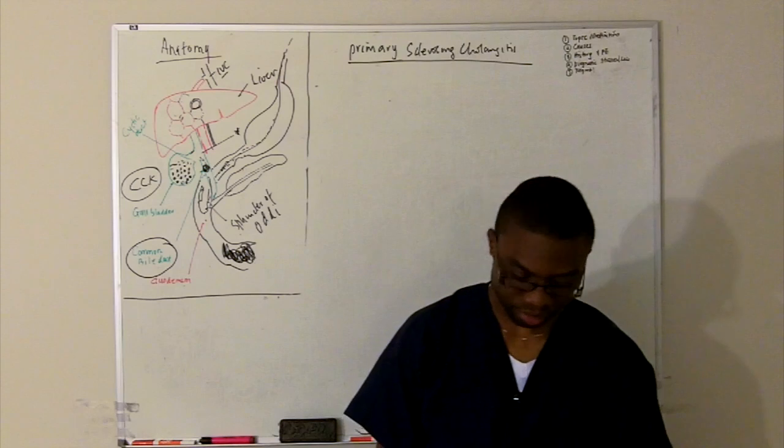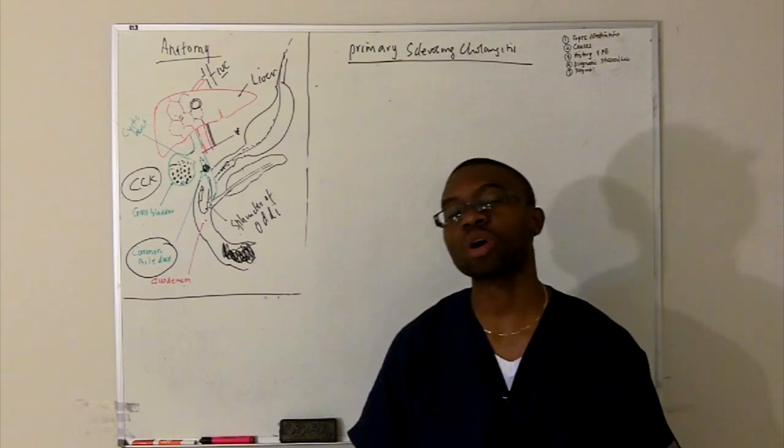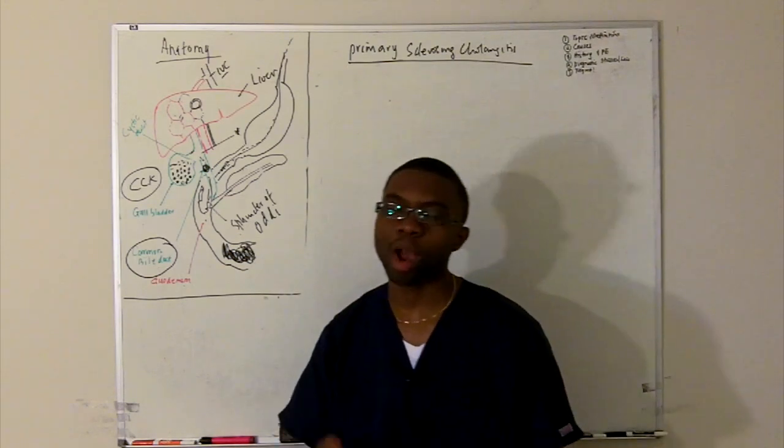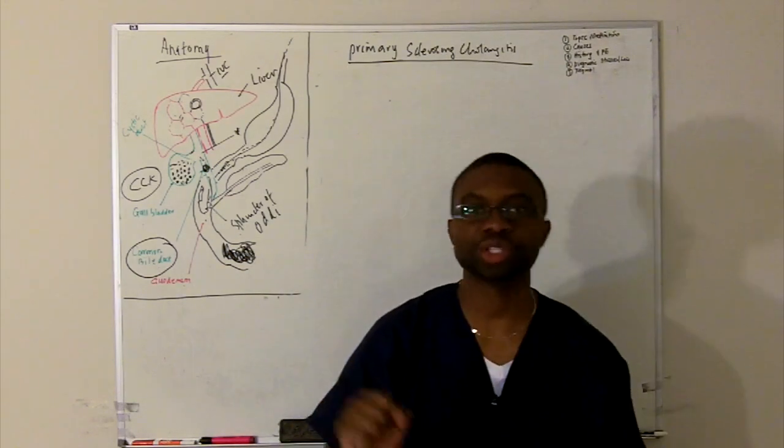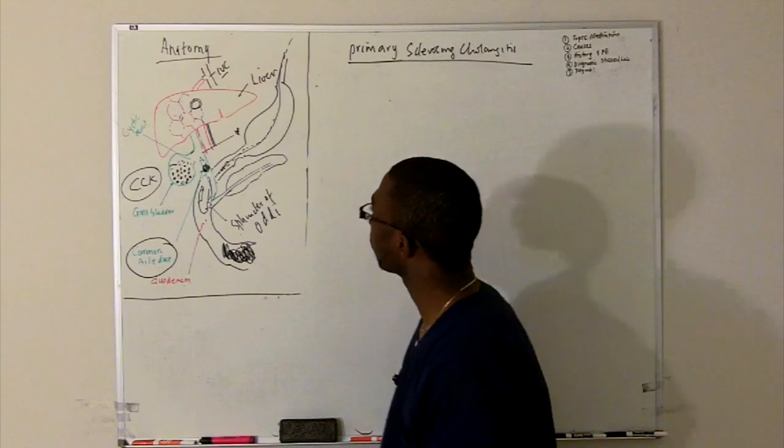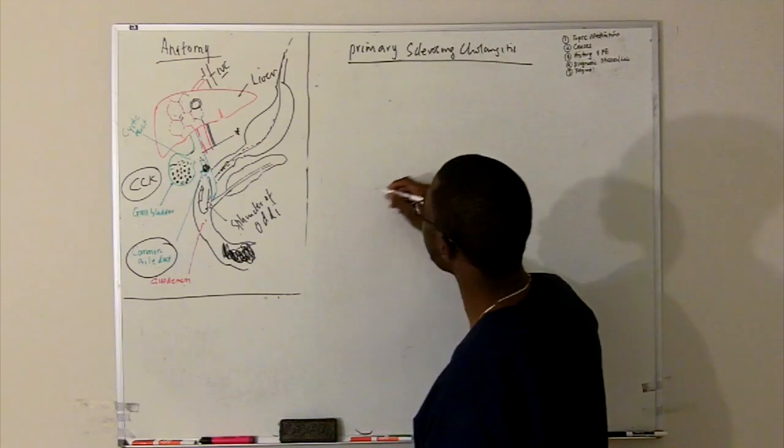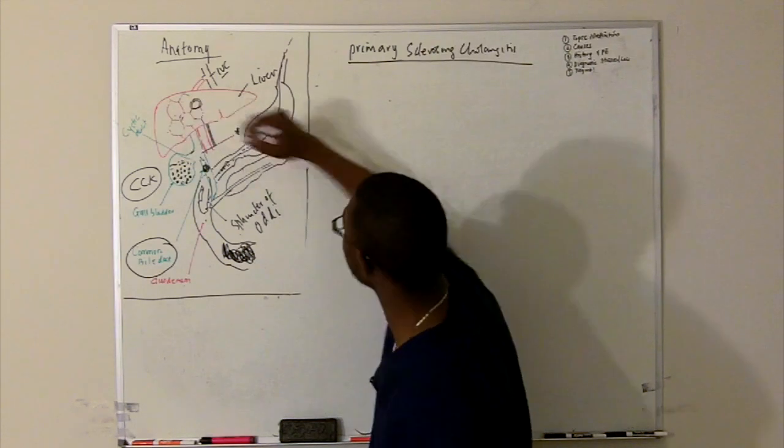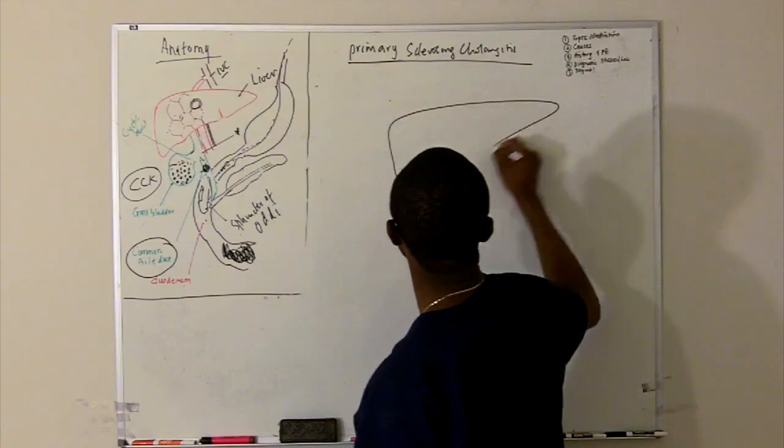Now the problem is we don't know what causes this. It's a chronic condition. We really don't understand why these people are getting the strictures. So let's try to draw it out. If you look at the liver here, I'm just going to try to draw it out here again.